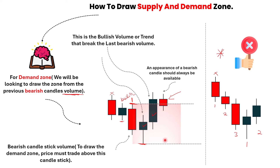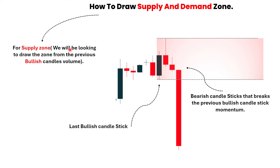Now let's move on to the supply zone. For the supply zone, we will be looking to draw the zone from the previous bullish candle's body. We have this bullish candle here. The moment price breaks this bullish candle's low, that's when we can draw the zone — this is the last bullish candle. You have to understand that. That is the only way you can draw supply and demand zones.